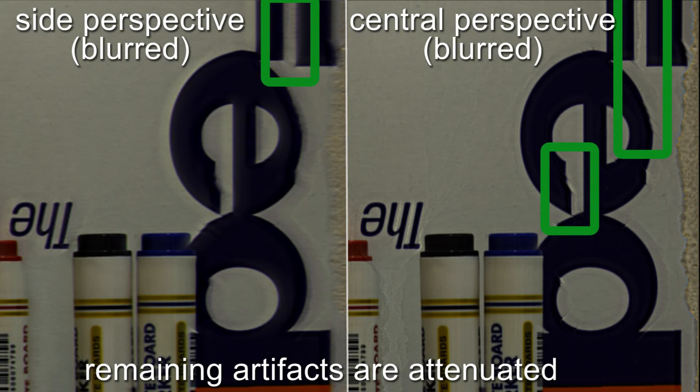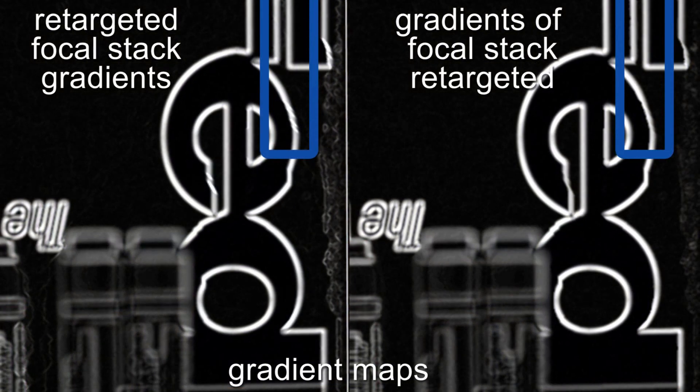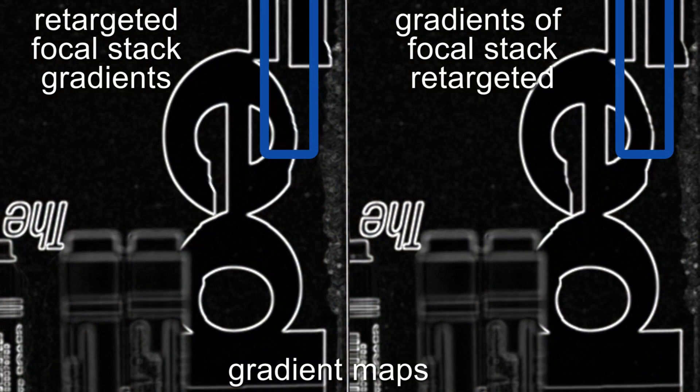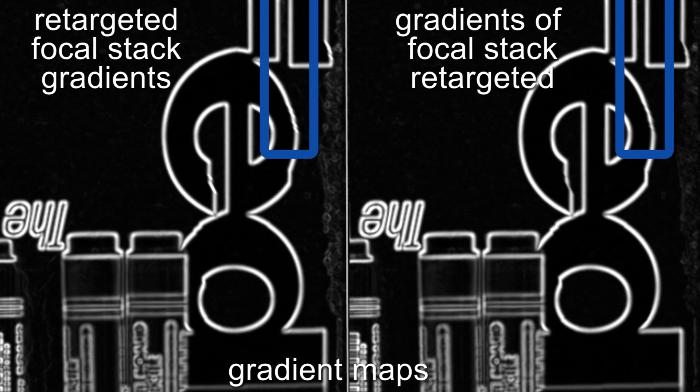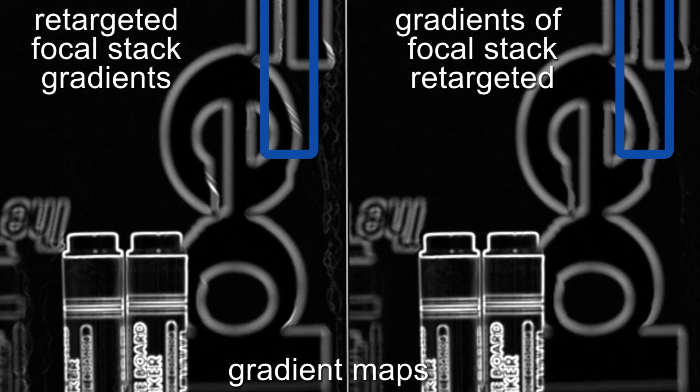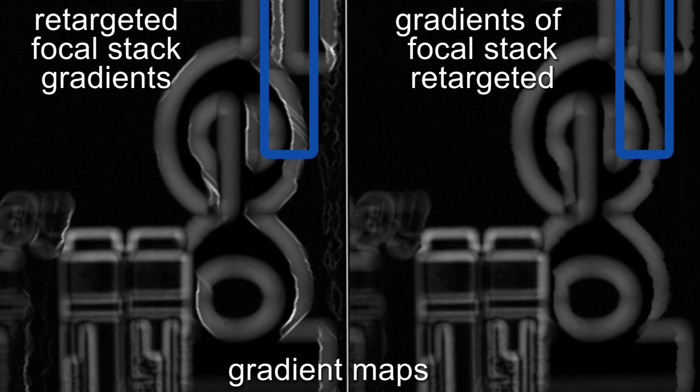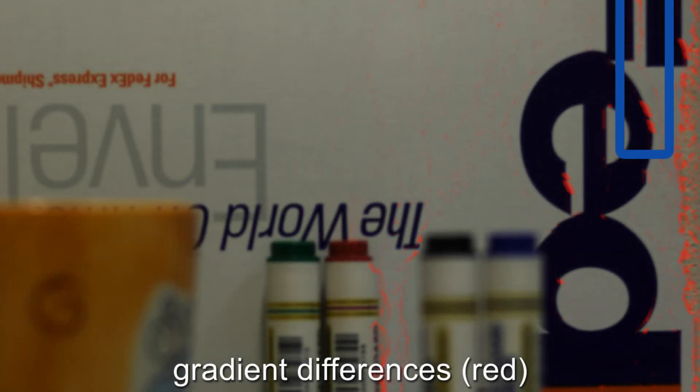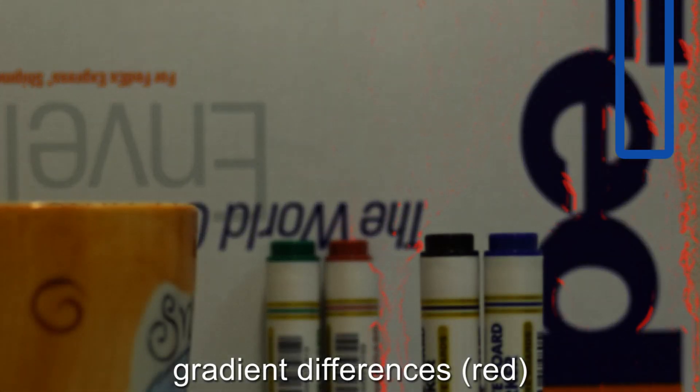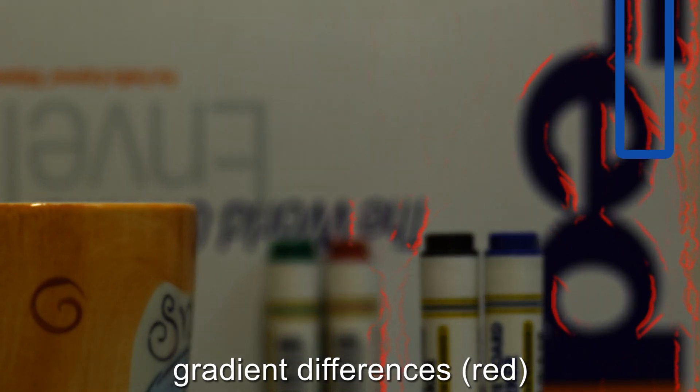New gradients in each focal slice are determined by comparing two corresponding gradient maps. One is computed from the retargeted focal stack slice and the other one is computed by retargeting the gradient map of the original focal stack slice. The individual focal slices are then convolved in regions where these gradient maps differ.